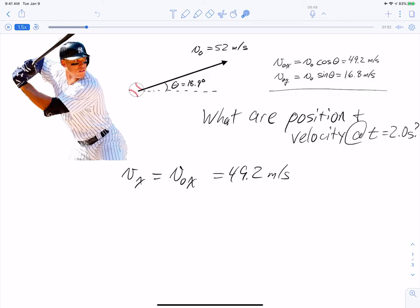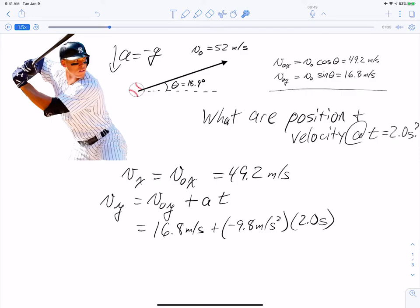And then our y component is going to be given by v0y plus the acceleration times time. Now in this case, we can put it up here, the acceleration throughout the problem points downward, and that's going to be negative g. So when we plug in numbers, which we're ready to do here, we can say our initial velocity in the y direction is 16.8 meters per second, and then we're going to have plus a negative 9.8 meters per second squared times 2.0 seconds. And that gives us that the y component of the velocity at that time two seconds later is negative 2.8 meters per second.